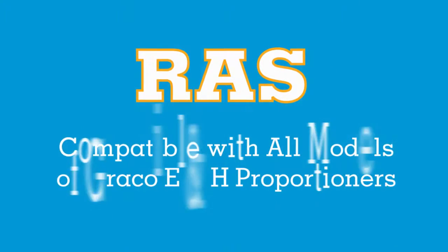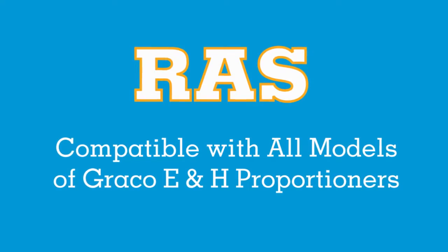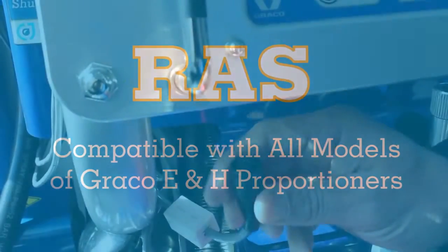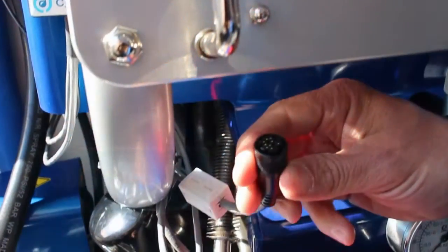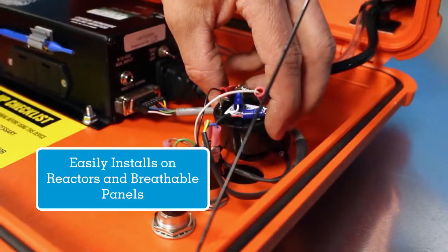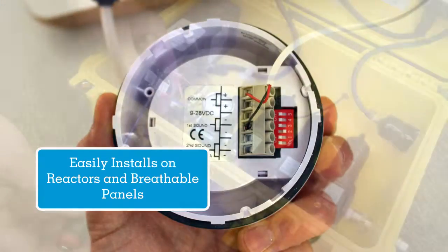The RAS is compatible with all models of Graco E and H proportioners, such as the E20, E30, H25, and H40, as well as all models of high-pressure breathable air panels.